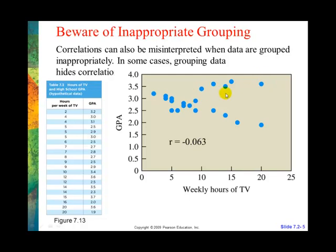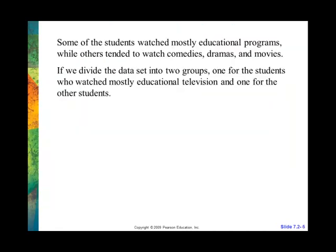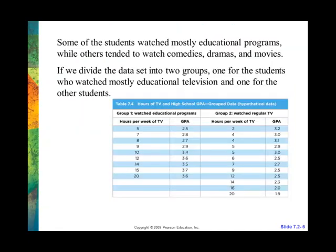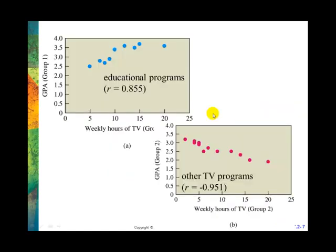Well, if these were in fact two different groups, and we find out that they are — one group was actually watching educational television and the other group was watching all the rest of the stuff on television — what happens? We divide them, and here are the new graphs of the data. Our two groups — educational television and regular television. When we graph these, educational television has a very high positive correlation of .855. So the more hours they spent watching educational television, the higher their GPA went. And everybody who watched regular TV has a negative .951 correlation — the more hours of regular television they watched, the worse they did on their GPA.